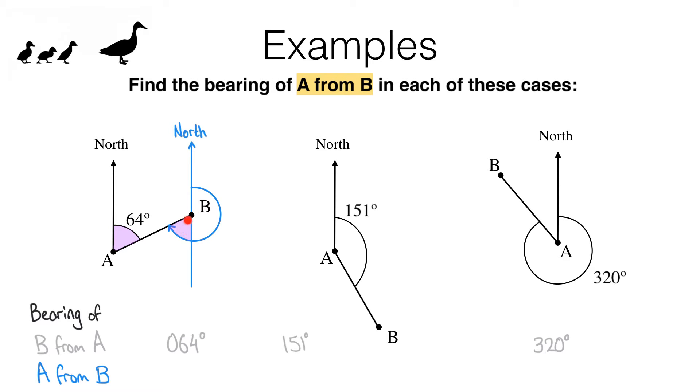Therefore, this angle is 64 degrees, which means the angle we are looking for is 180 degrees plus 64 degrees, which gives us a bearing of 244 degrees.